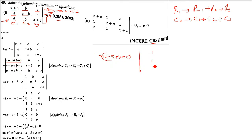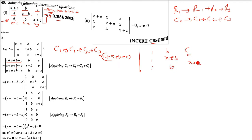Now here it will be 1,1,1. What we have done is Column 1 is changed to Column 1 plus Column 2 plus Column 3. We have got 1,1,1. We have B, X+B, and B. We have C, C, and X+C. Now the best thing is we need maximum zeros. If we subtract the rows, you will get two zeros from 1,1,1 and two zeros from C,C and B,B.